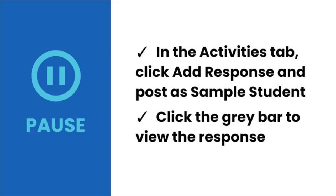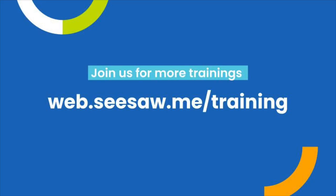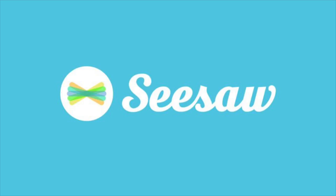Pause the video now. In your teacher account, pretend you're a student. Go to the Activities tab, click Add Response, select Sample Student, and complete the activity. You did it! You're set up with your Seesaw for Schools teacher account and you've mastered the Seesaw basics. With these skills, there's so much you can do on Seesaw — and there's so much more we'd love to show you. Find more free training at web.seesaw.me/training. See you again soon here at Seesaw.